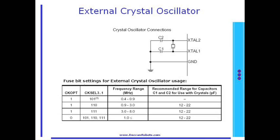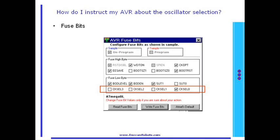Thus, an external crystal-based oscillator is used as the system clock. Fuse bits convey your oscillator usage to the AVR. You have to configure the CKSEL0 to CKSEL3 bits using an ISP programmer. A snapshot of HandyProg ISP programming software is shown on your screen. These fuse bits are for a Mega 8 microcontroller. The screen shows CKSEL0 is in the unprogrammed state, while the rest of the CKSEL bits are in the programmed state.